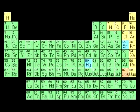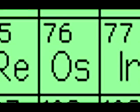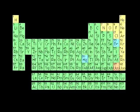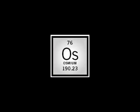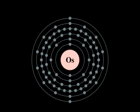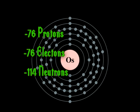Before we get into the real juicy information about Osmium, let's take a look at some basic information. On the periodic table, Osmium is located in Group 8, Period 6, meaning it's a transition metal. The symbol of Osmium is Os, and it has an atomic number of 76. The atomic mass is 190.2 atomic mass units, while the molar mass is 190.2 grams per mole. The mass and atomic numbers show that an atom of Osmium contains 76 protons, 76 electrons, and 114 neutrons.